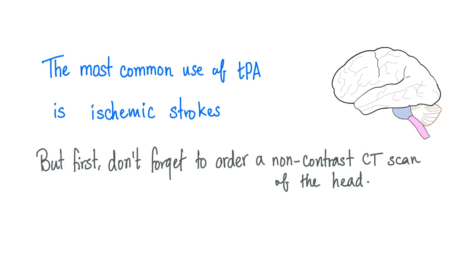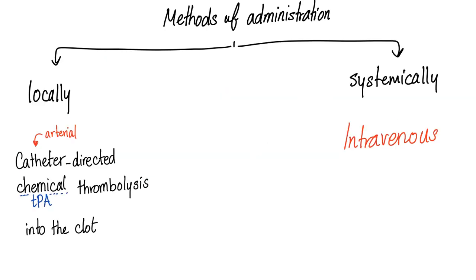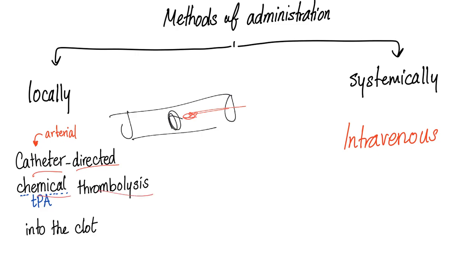The most common use of TPA is ischemic stroke. First, order a non-contrast CT scan of the head to rule out hemorrhagic stroke, because TPA is contraindicated in hemorrhagic strokes. TPA can be given locally via catheter — catheter-directed chemical thrombolysis — or systemically by intravenous injection. It's a very expensive injection because it saves lives, and higher demand drives up price — Economics 101.